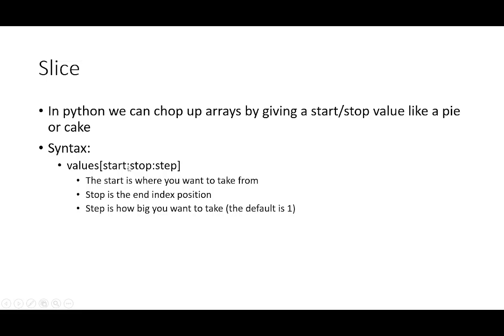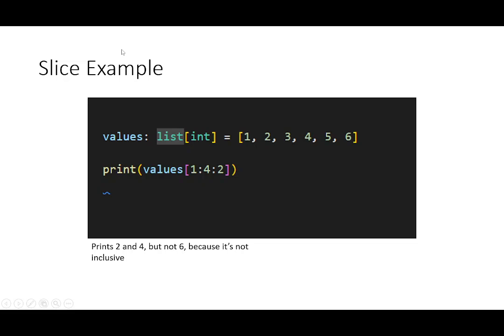With slicing, we can chop up arrays by giving a start stop value like a pie or cake. The syntax is array object, open bracket, your start value as an integer, your stop value as an integer or step. Start is always required. Stop and step are optional. Start is where you want it to take from. Stop is the end index position. Step is how big you want to take. The default is always one. Actually, if you don't want to provide the start value, I misspoke before, you can just put a colon and it'll assume it's the zero spot or the first spot. Let's take a look at a slice. We're going to start at position one, go to four, and take steps of two. It'll print two and four. It won't print six because it's not inclusive.